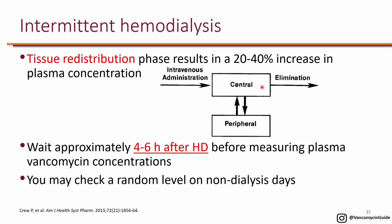Hemodialysis is basically removing vancomycin from the central compartment. So immediately after completion of hemodialysis, if you get the level, it will show the level in the central compartment — the blood — which might be low. However, if you give it some time, about two to three hours, vancomycin starts to come out of peripheral tissue to find equilibrium between blood and peripheral tissue. So if you get a level immediately after dialysis, the level could be artificially low, and then three hours later the level goes back up.